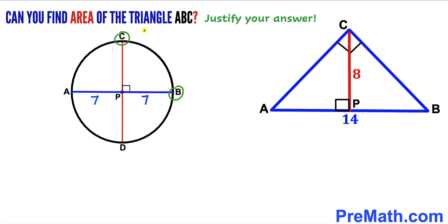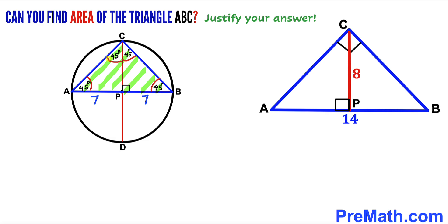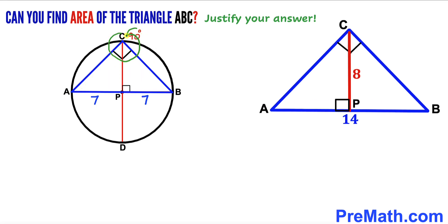Now I am going to connect points B and C, and likewise connect points A and C, giving us triangle ABC. We can observe that triangle BPC is an isosceles triangle, since both sides are radii of the circle, so each base angle is 45 degrees. Likewise, triangle APC is also isosceles, with each base angle 45 degrees. Therefore, the whole angle ACB equals 45 plus 45, giving us a 90-degree angle.